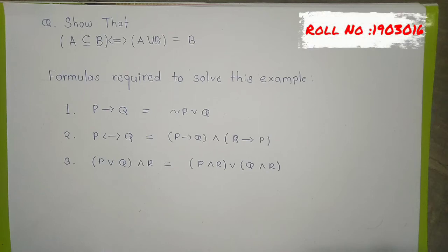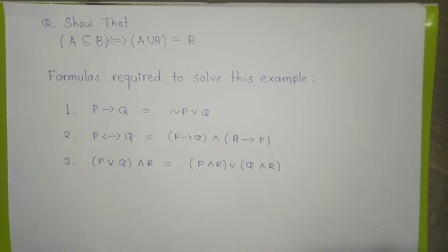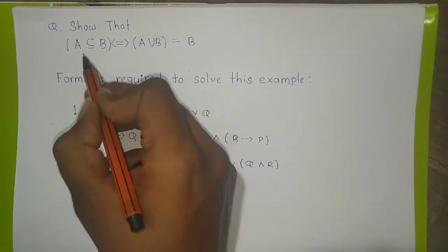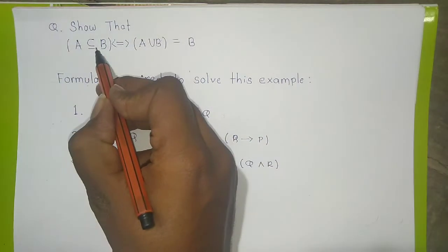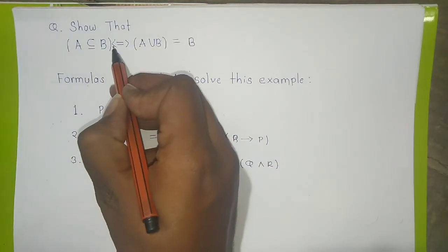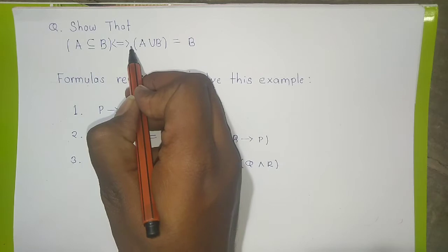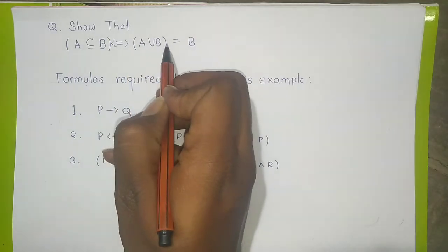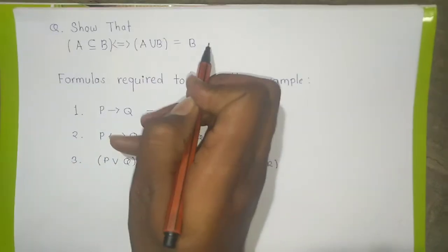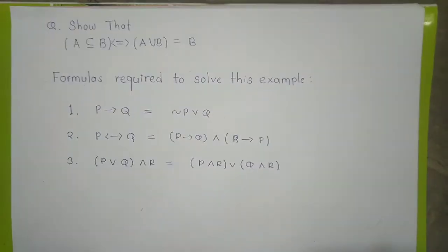Hello guys, I am Shubham and in this video we are going to see how to show that A is a subset of B, double implies that A union B is equal to B.